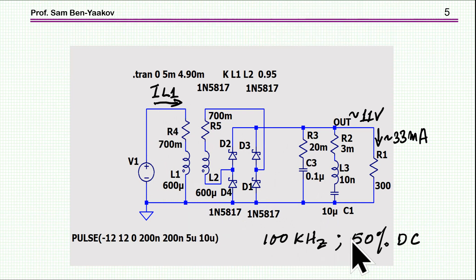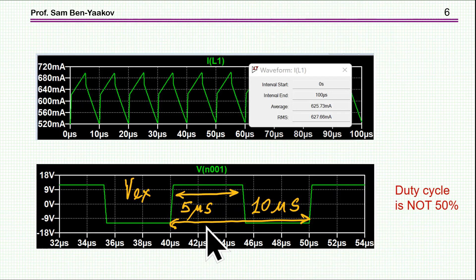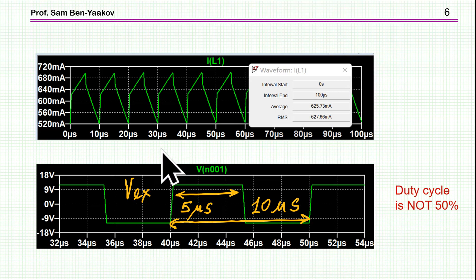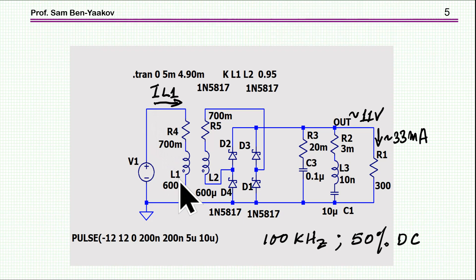I'm now going to run this LTSpice simulation and look at the input current primarily. Again, 100 kilohertz, 50%. The on is 5 microseconds, the off is 10 microseconds. Here is what I'm getting. I see the input plus-minus 12 volts and the current of the primary. If I look at it, it doesn't look very good. First of all, there is a DC offset. Secondly, it doesn't look symmetrical at all.